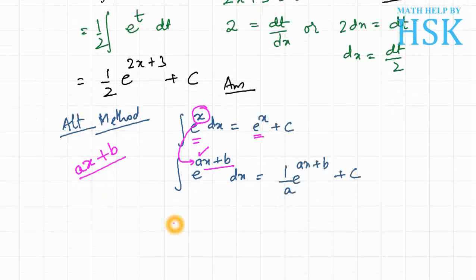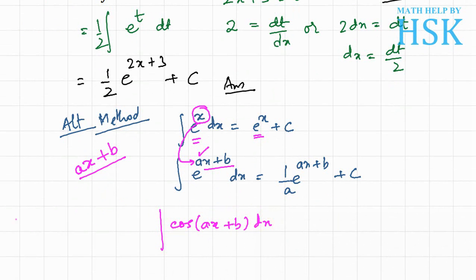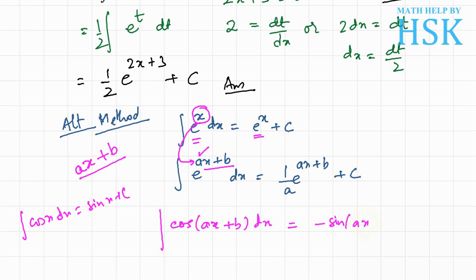This method is also helpful for other functions. For example, to integrate cos of ax plus b: we know integration of cos x is sin x, so integration of cos of ax plus b equals sin of ax plus b, and because the coefficient of x is a, we get 1 upon a times sin of ax plus b plus c.